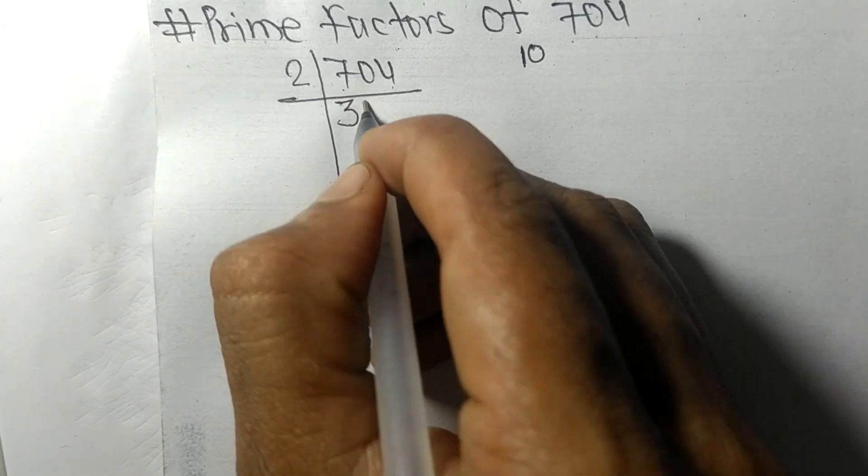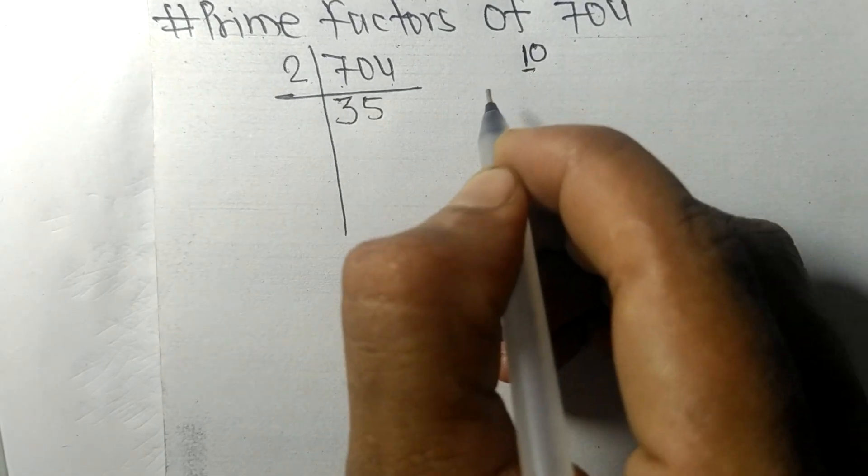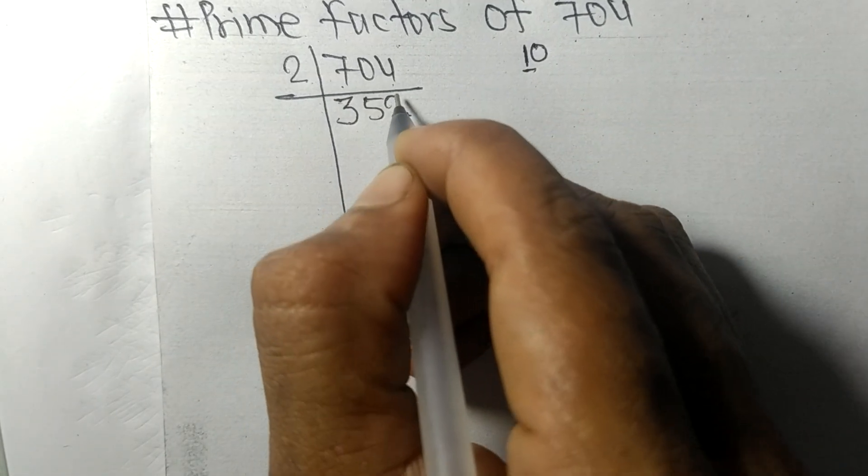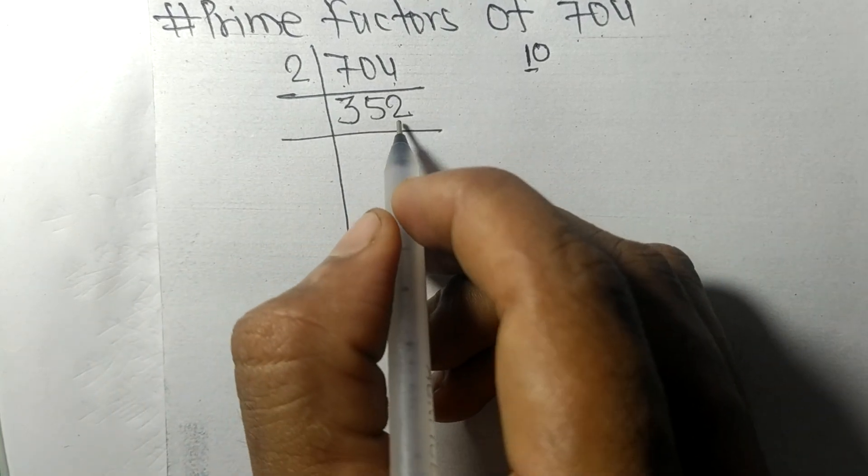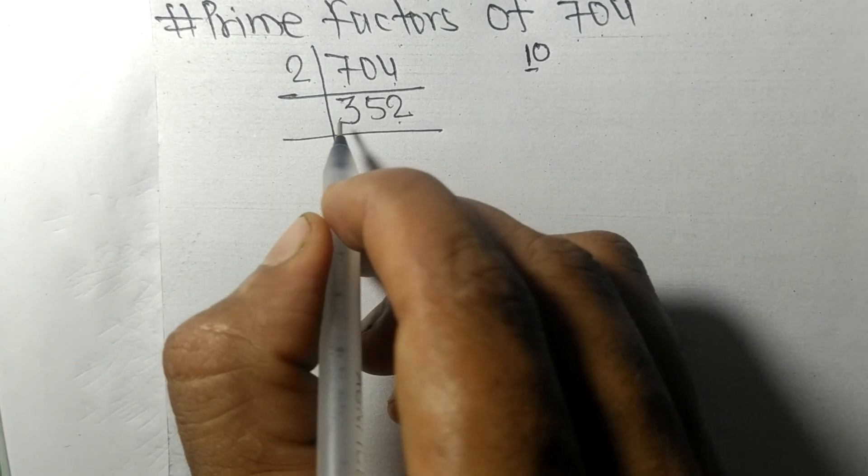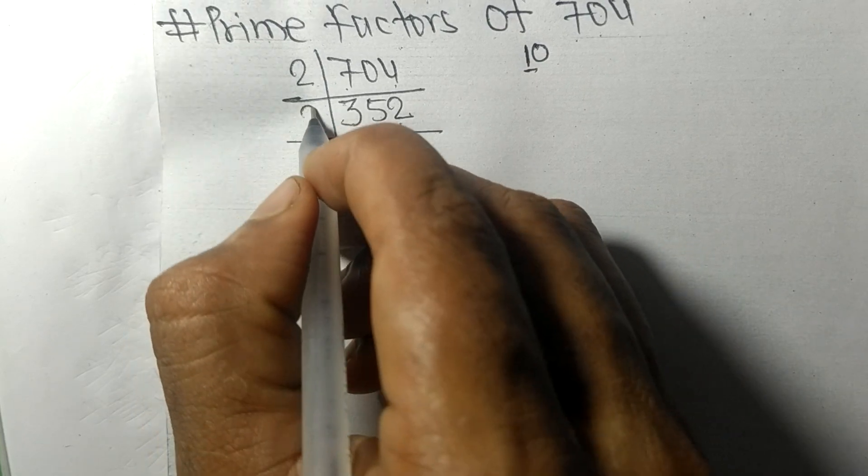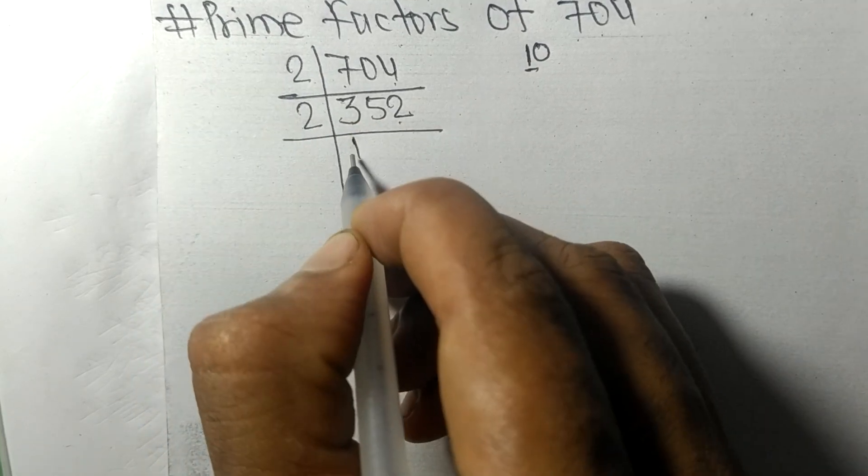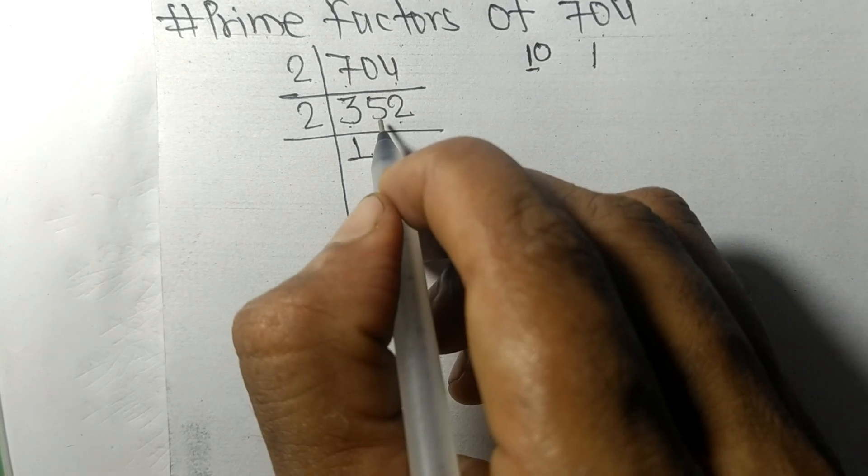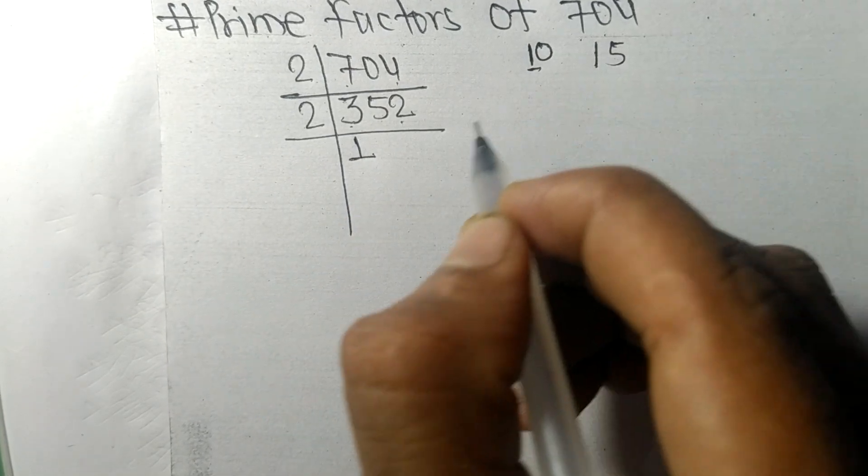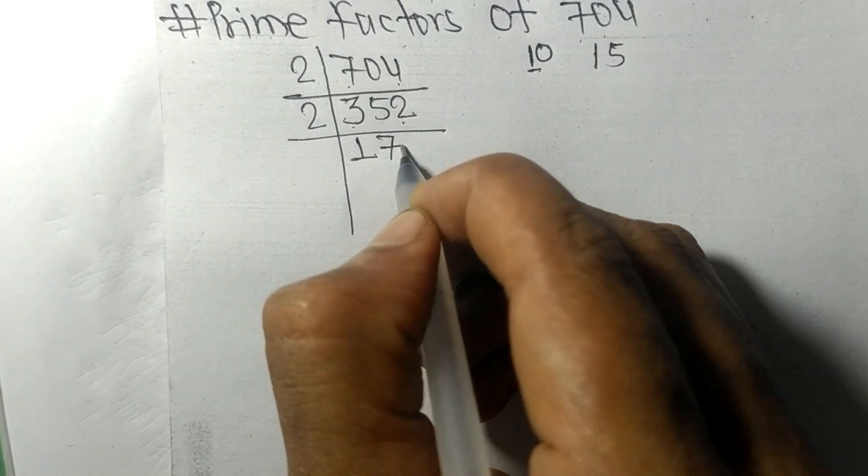Again we have even number 2 at last, so it is divisible by 2. 2 times 1 mean 2, remainder 1 and 5. 15, 2 times 7 mean 14, and remainder 1 and 2. 12, 2 times 6 mean 12.